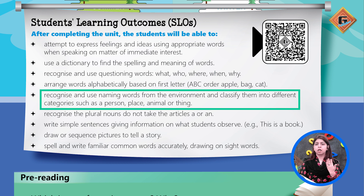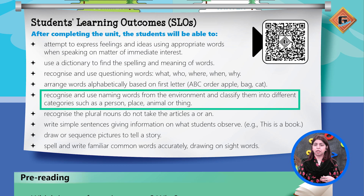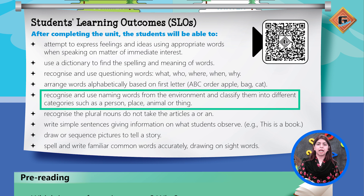جیسے کہ Hamna، table، book، cat اور Lahore — یہ ساری چیزیں noun ہیں۔ اب Lahore place ہے، Hamna جو ہے وہ person ہے، Book thing ہے، اور cat جو ہے وہ animal ہے۔